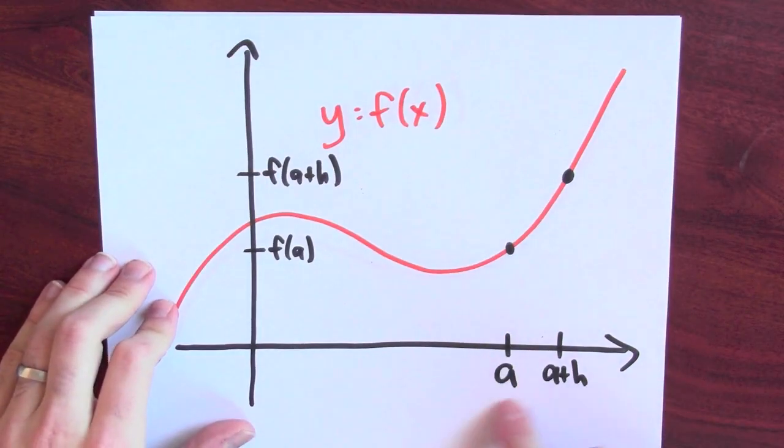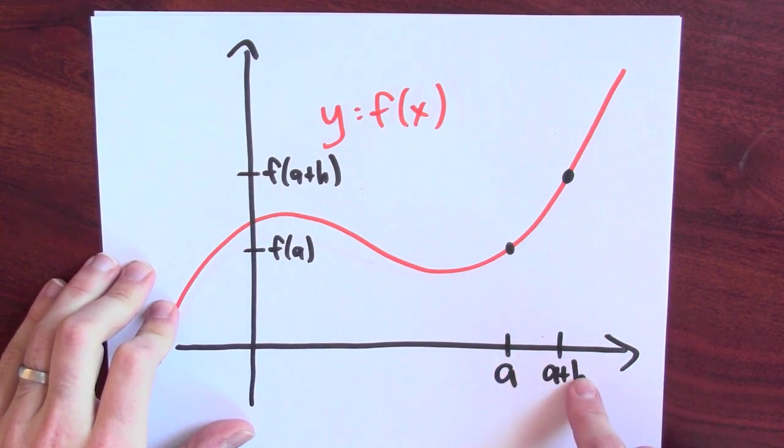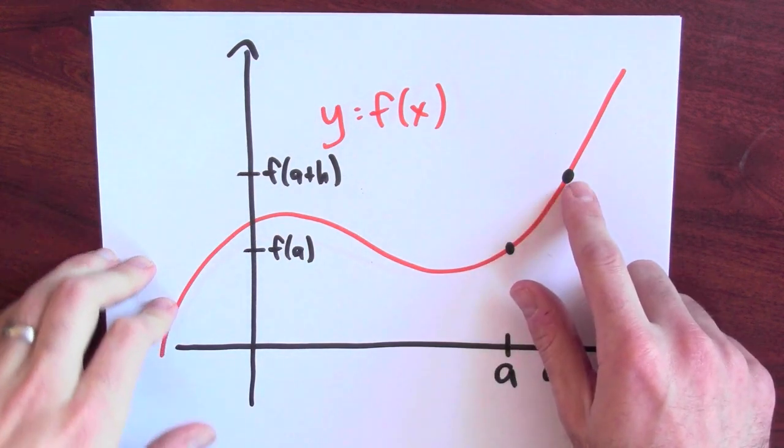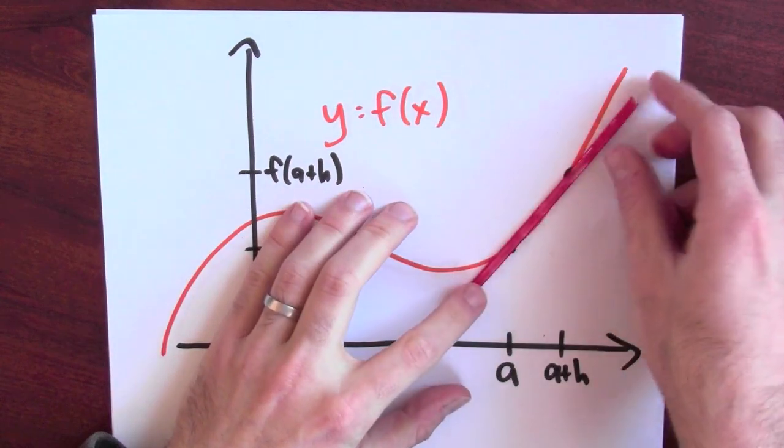What we're really calculating here is a limit. So here I've got an input A and an input A plus H, and here are the corresponding points in the graph of the function. I'm going to put a secant line through those points.